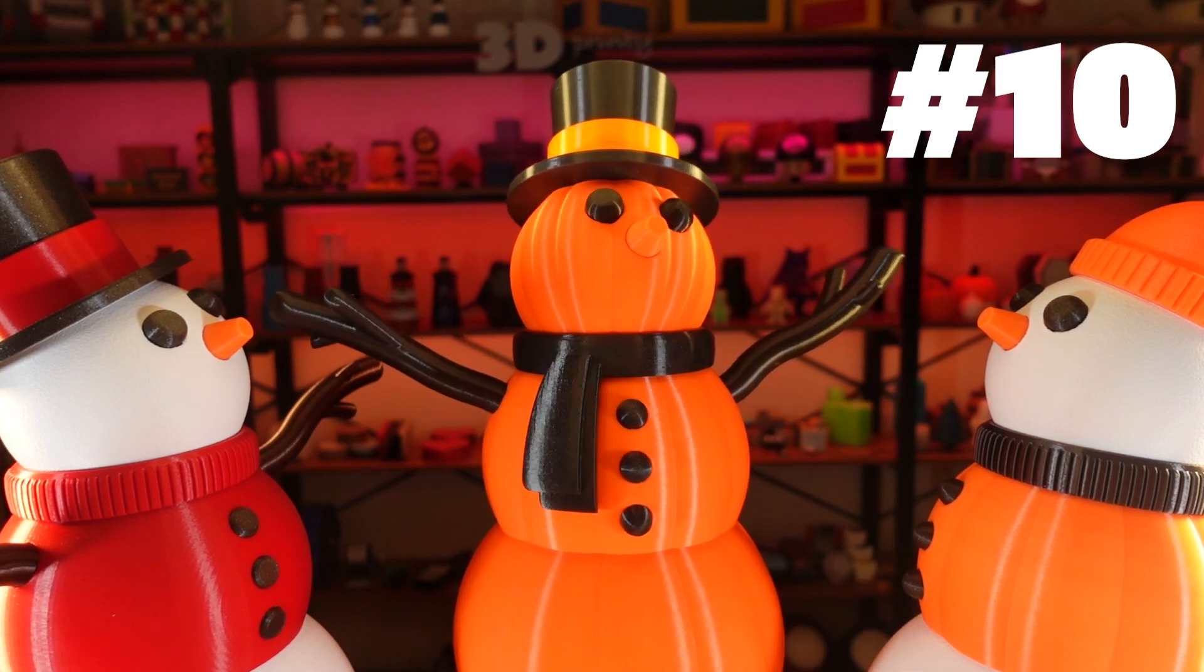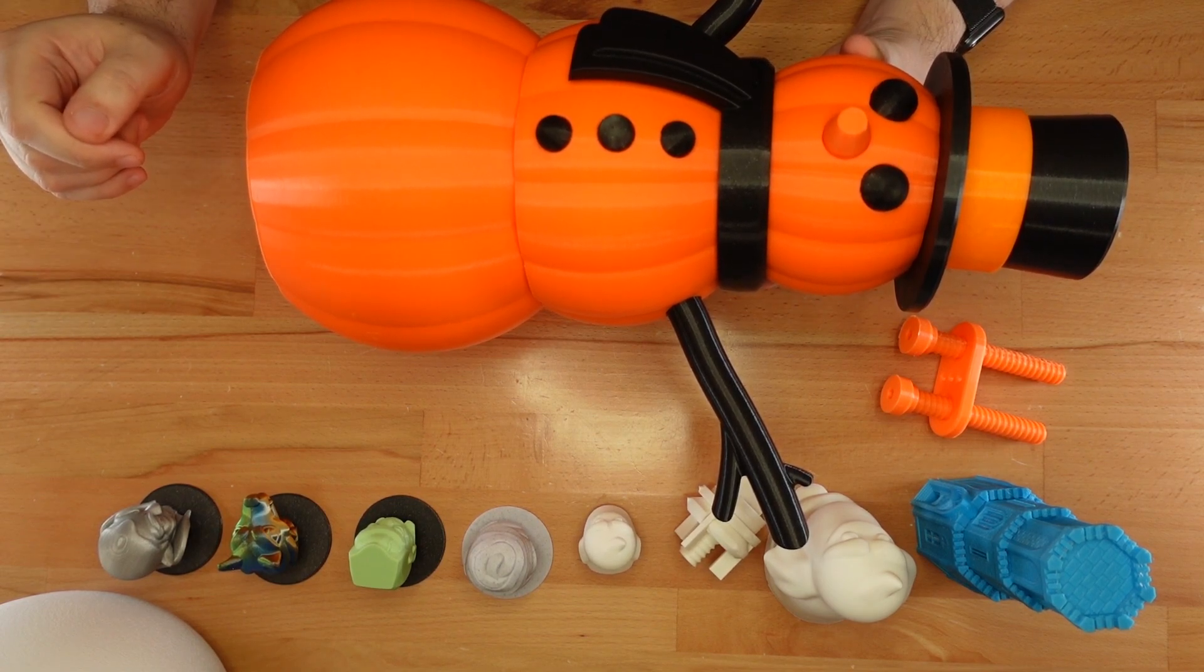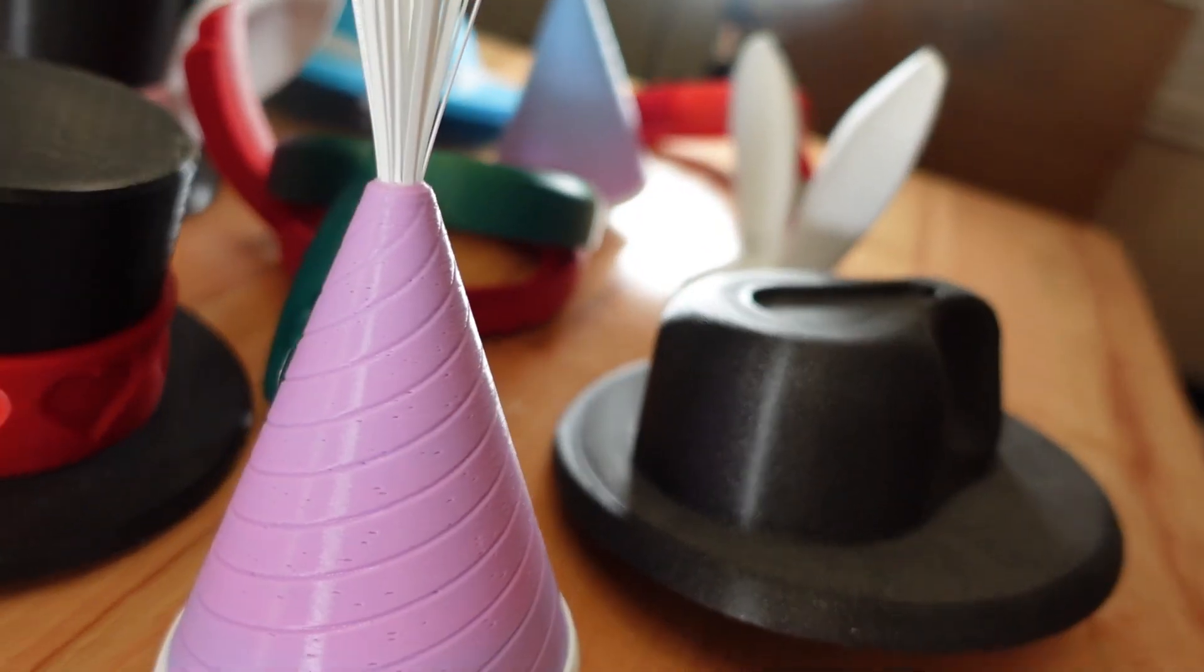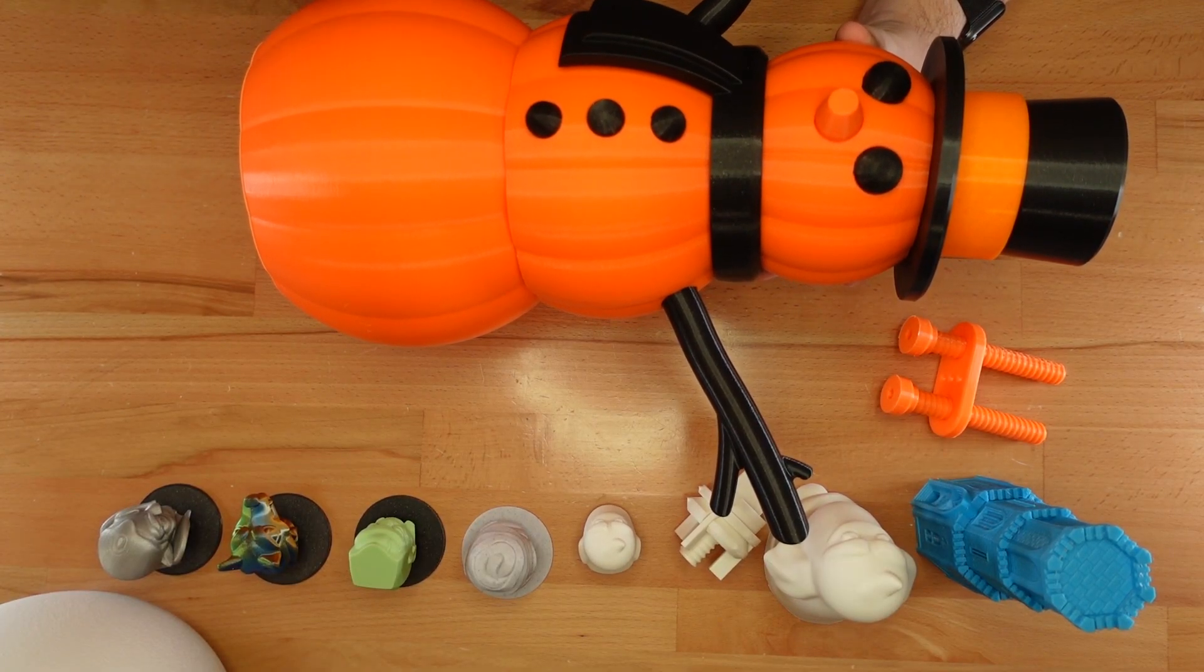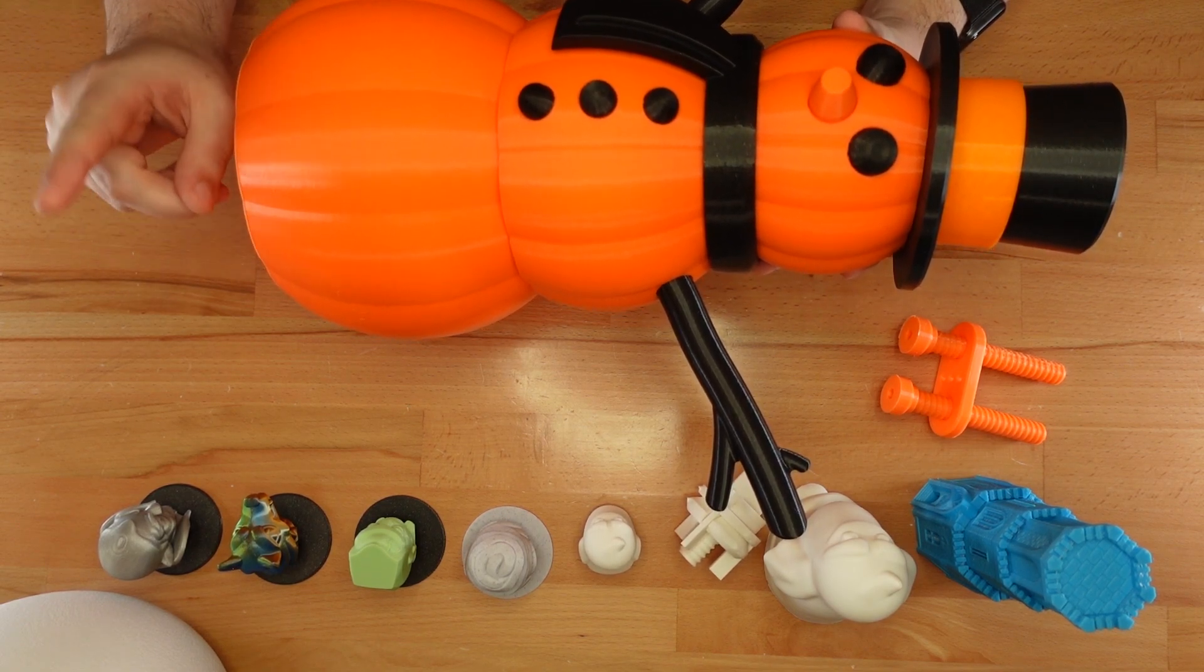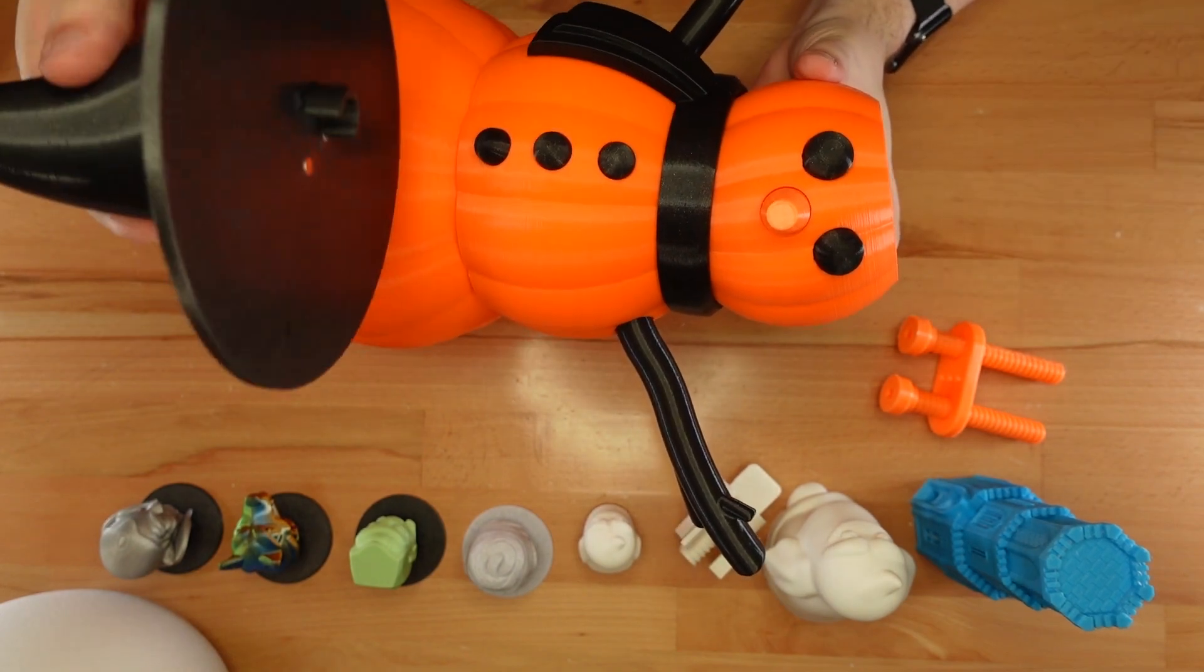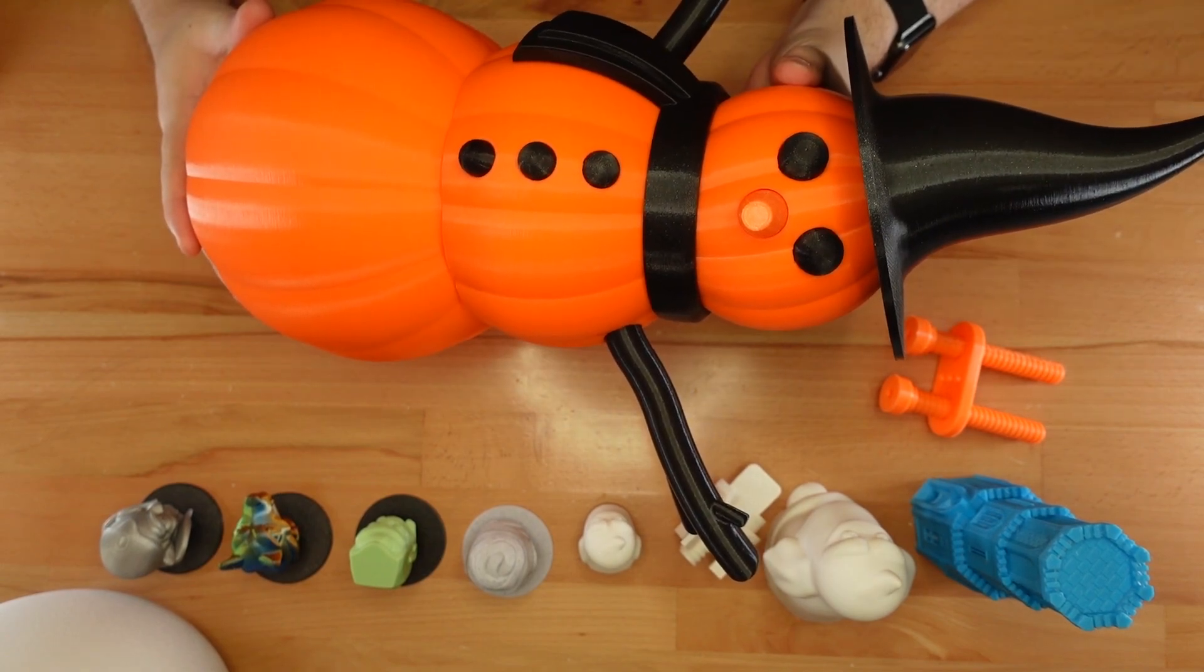Model 10, Giant Pumpkin Snowman. This snowman has gone all in with the fall theme and transformed entirely into a pumpkin stack. This poseable pumpkin person is fully compatible with all the existing snowman accessories. You can reuse any arms, buttons, or hats you've already printed. That said, instead of reusing an old hat, you might want to consider... Model 11, Giant Snowman Witch Hat. We'll just pop off that top hat and slide on the witch's hat. Now our pumpkin pal is truly ready for the season.